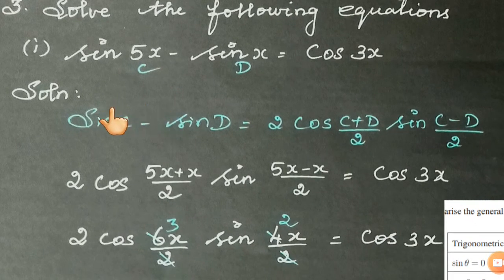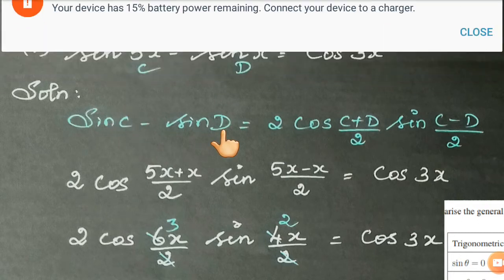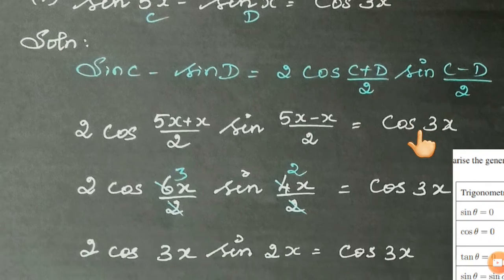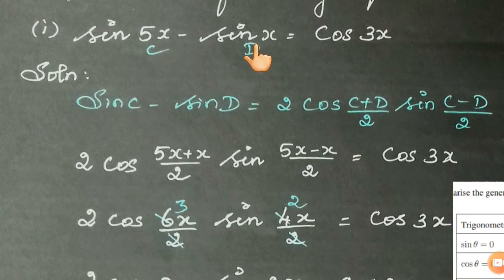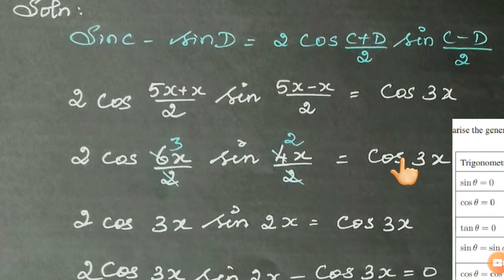Now let's see the solution. See the left-hand side — it is in the form of the identity: sin C minus sin D equals 2 cos((C+D)/2) times sin((C-D)/2). Substituting C = 5x and D = x, we get 2 cos((5x+x)/2) times sin((5x-x)/2), equal to cos 3x.